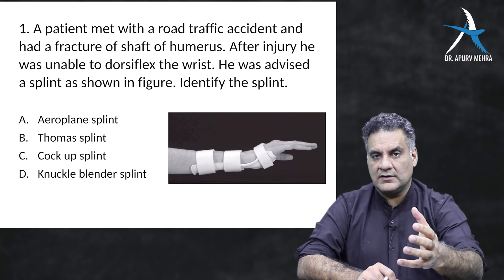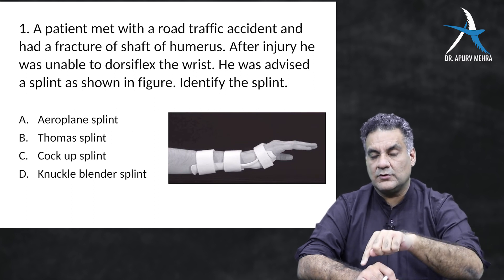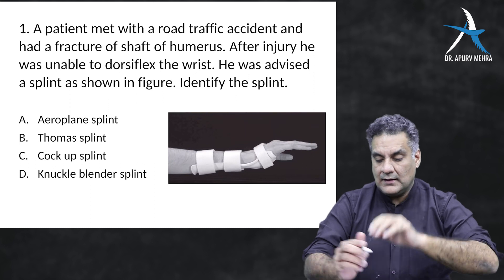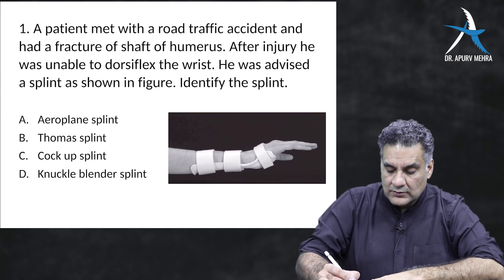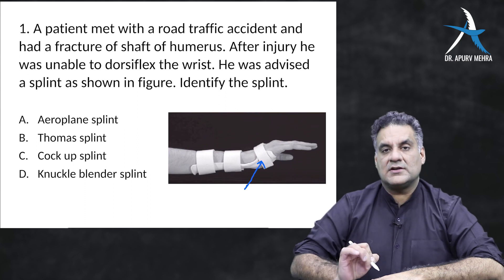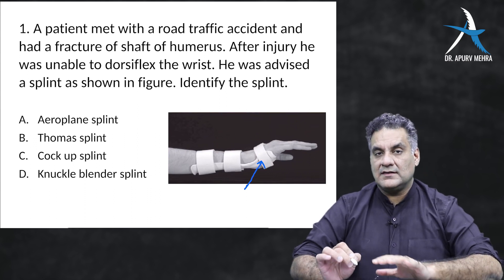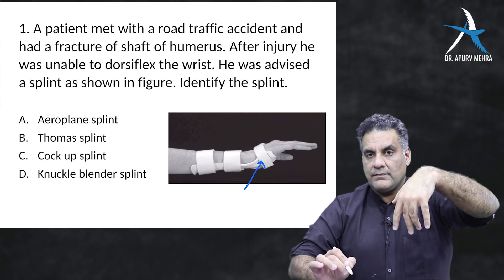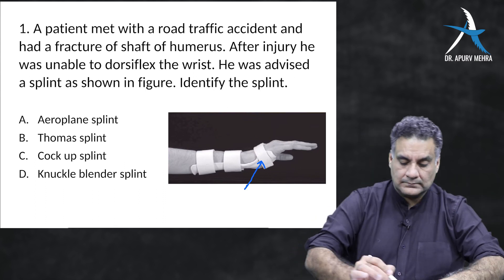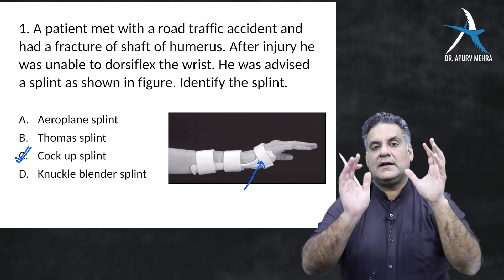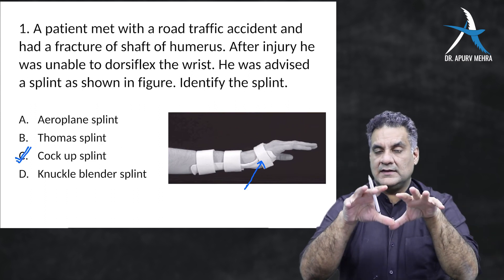The question showed an image of a splint and asked what it was doing — it is trying to put your wrist into extension. This is the wrist splint, also called the wrist drop cock-up splint. Let us now look at all the important nerves and their corresponding splints.